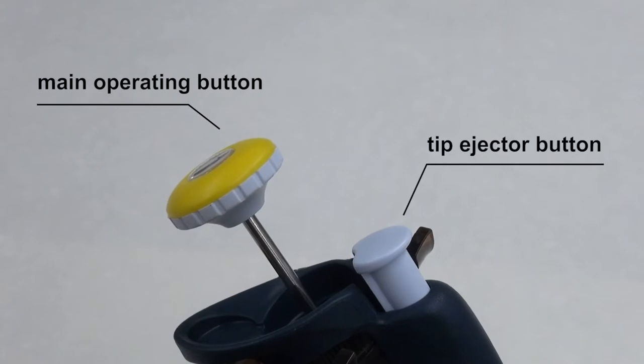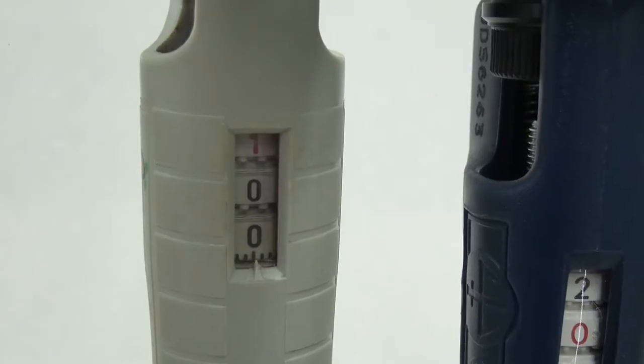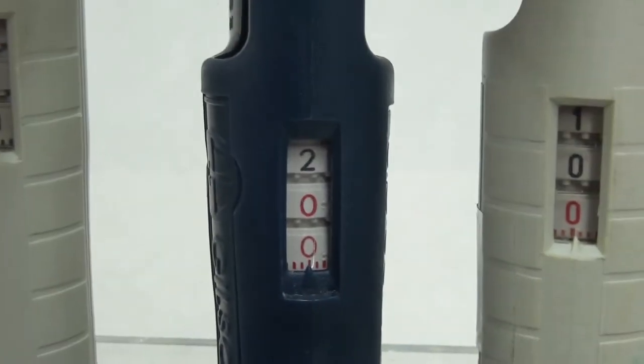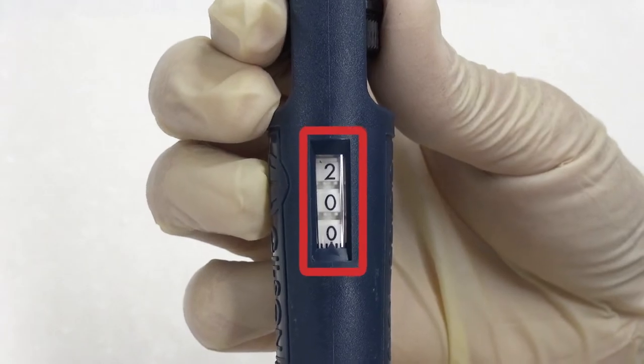The tip ejector button on the side is used to eject tips. There is a digital volume indicator at the middle to display the current aspiration volume. Note the scale of displayed digits.